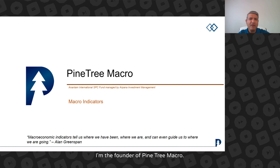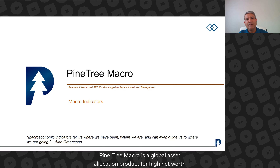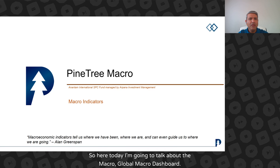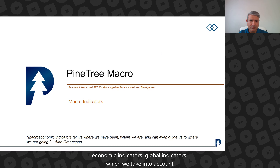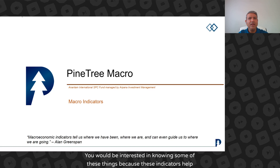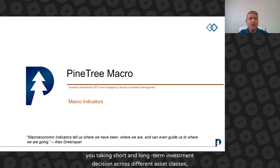Hi everybody. I'm the founder of Pine3 Macro. Pine3 Macro is a global asset allocation product for high net worth individuals. So here today, I'm going to talk about the global macro dashboard. This is the one dashboard which we maintain, where we maintain most of the economic indicators, global indicators, which we take into account whenever we are making investment decisions. You would be interested in knowing some of these things because these indicators help you taking short and long-term investment decisions across different asset classes, whether it is in India or whether it is US.